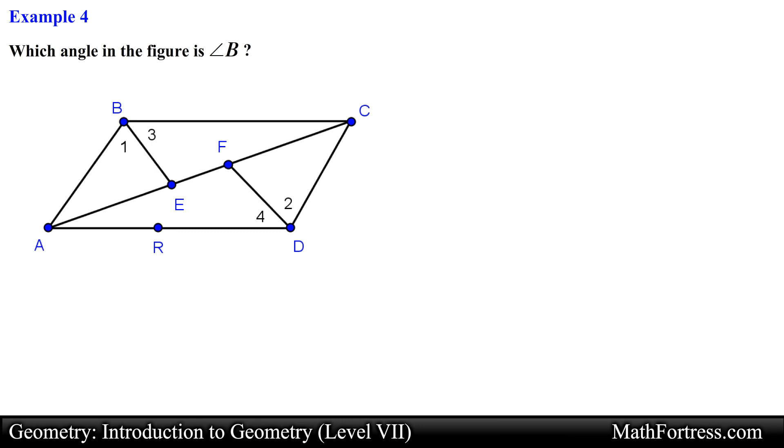Which angle in the figure is angle B? We are asked to identify which angle can be named as angle B. Notice that point B is the vertex of 3 distinct angles, specifically angle 1, angle 3, and angle ABC also known as angle CBA. Since point B corresponds to the vertex of 3 distinct angles, none of the angles can be solely called angle B. We will need to be more specific and use either the numbers or points to denote specific angles.